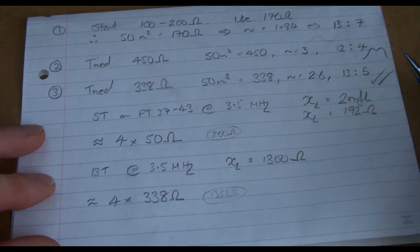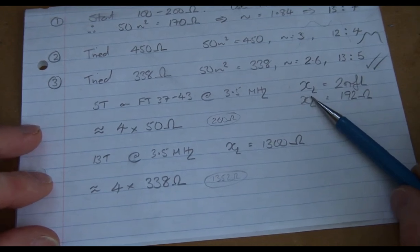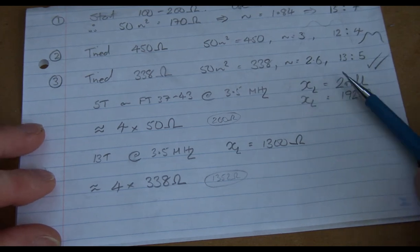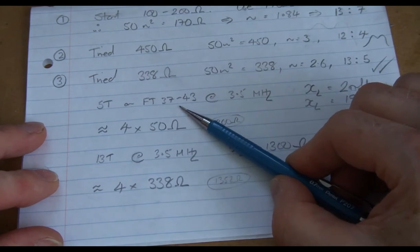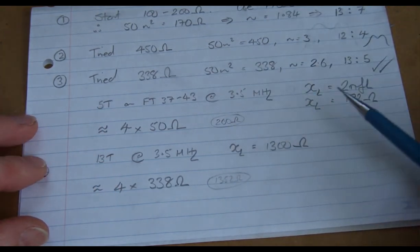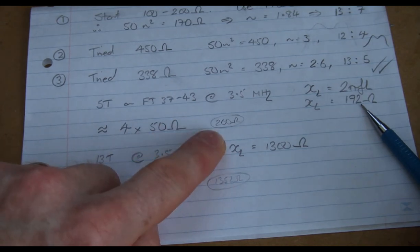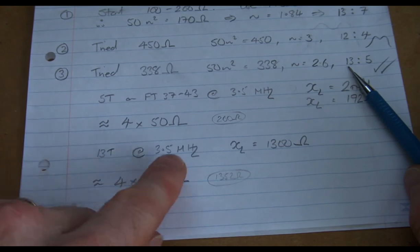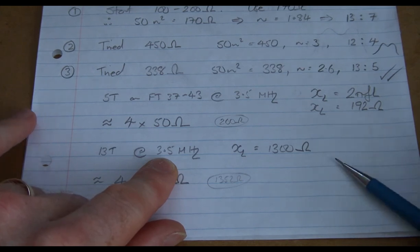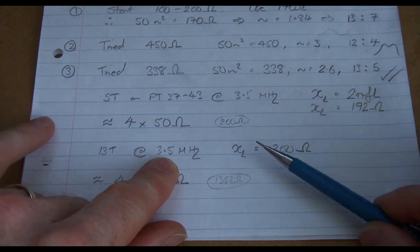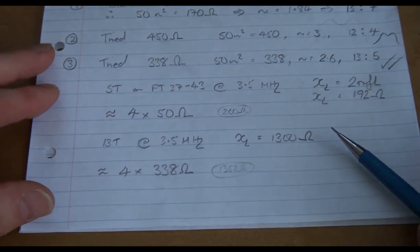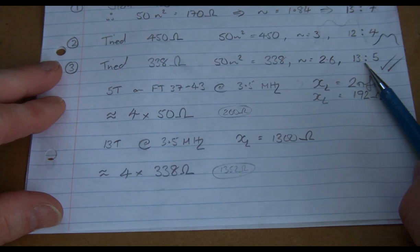So 13 to 5 gives us an N of 2.6. So N squared times 50 gives us 338. So that's sort of halfway between roughly the 450 and the 170. And I did plot that, and it looks pretty good, and we'll look at that in a sec. And just to sort of double check, our sort of rules of thumb, that we want to have four times, or the inductive reactance needs to be four times our load. So on an FT37-43, which both these transforms are wound on, our five turns gives us 192 ohms, which is pretty close to four times 50. And then on the other side, our 13 turns gives us at three and a half megahertz. So for this radio, it's an 80 meter and a 20 meter radio. So the lowest frequency is going to give us our lowest inductive reactance. So at three and a half megs, we get 1300, which is pretty close to three times 338.